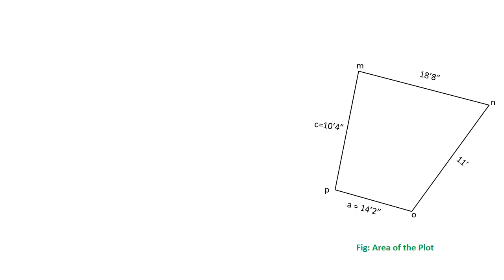This is the area of the plot which is shown here. The dimensions are: from M to N is 18 feet 8 inches — a single quote indicates feet and double quote indicates inches. From N to O is 11 feet, O to P is 14 feet 2 inches, and from P to M is 10 feet 4 inches. You can see here all sides are different.